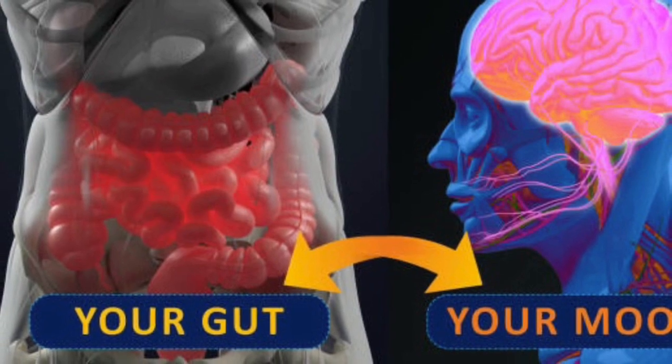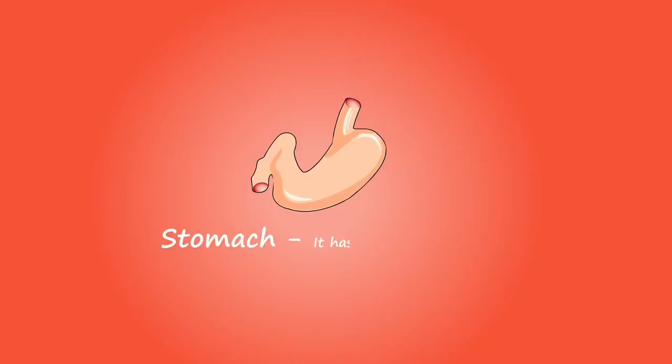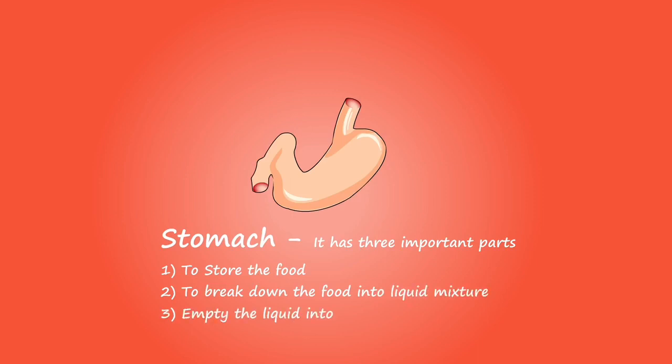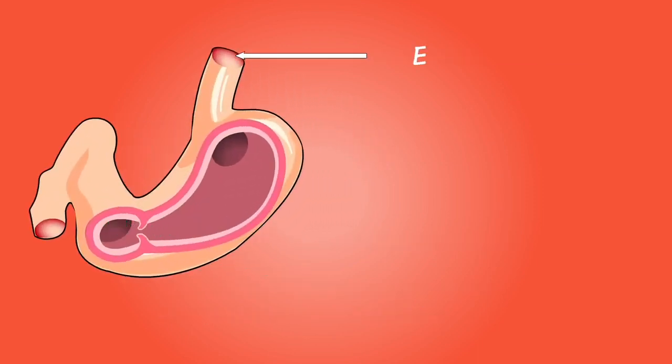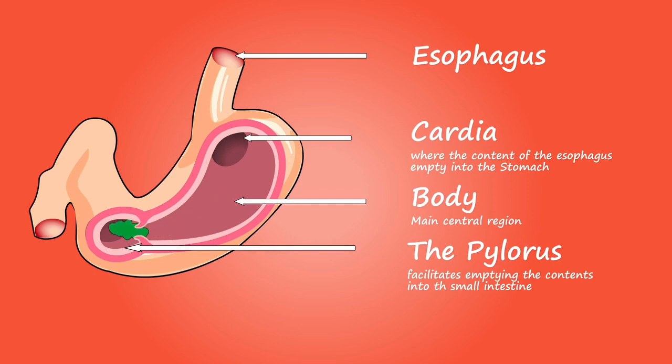Within the gut, enteroendocrine cells pump out hormones that kick off digestion and suppress hunger. These cells have little foot-like protrusions that look remarkably like synapses, the structure that neurons use to talk to each other using chemicals. With the help of a glow-in-the-dark rabies virus, which can jump from synapse to synapse, the team found that enteroendocrine cells directly link to neurons in the vagus nerve, a giant nerve that runs from the brain to vital organs such as the heart and lungs.